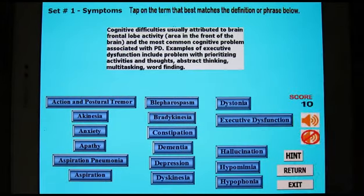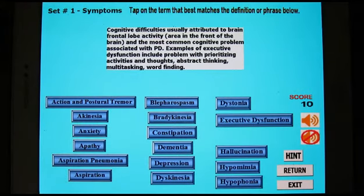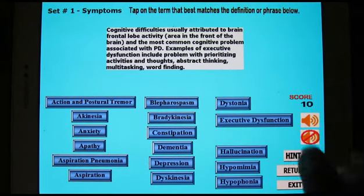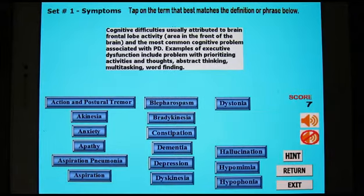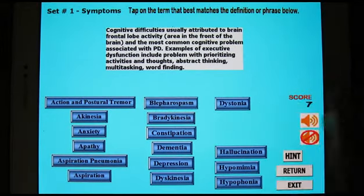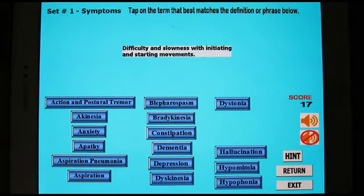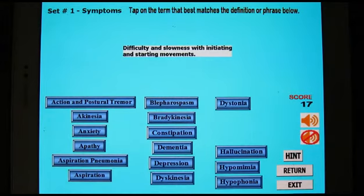You see I got ten points and a new definition came up, so I have to pick that. If you don't know the definition, you can hit the hint button and that will flash the answer. It deducts three points when you do that. Then you tap that and you get the points for picking the right answer, even though you cheated sort of — you only got seven points net.